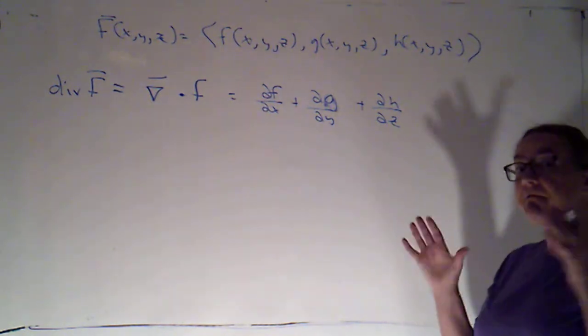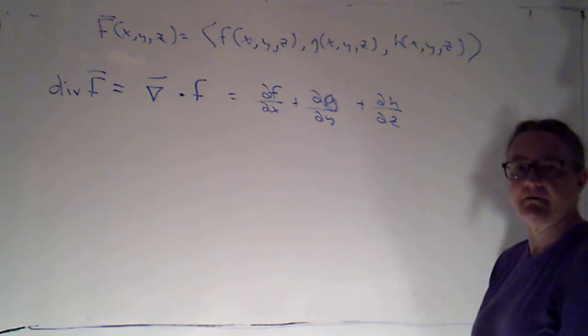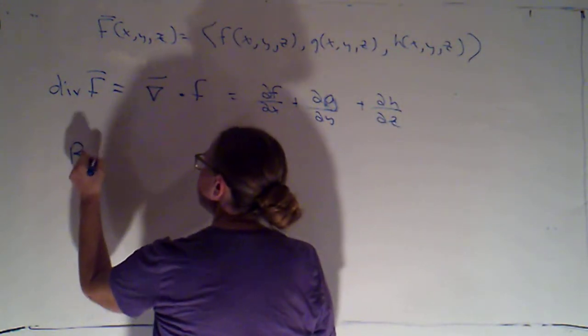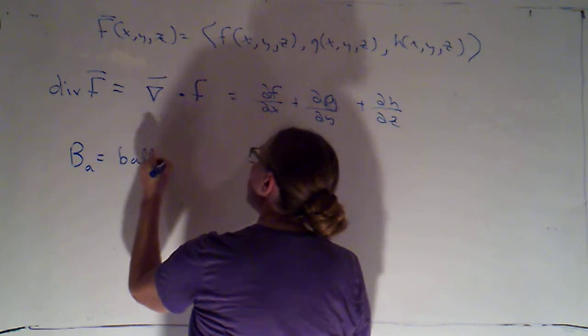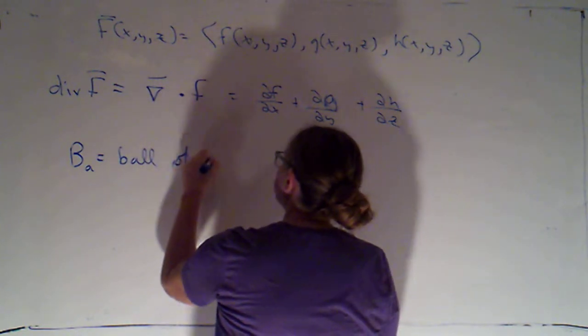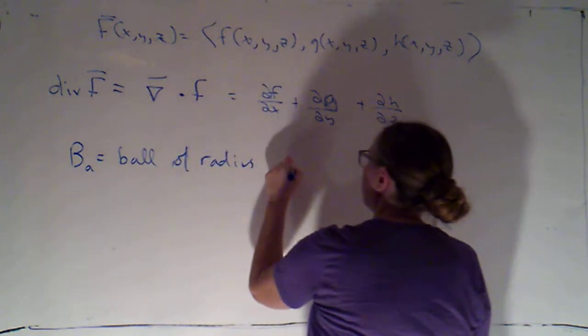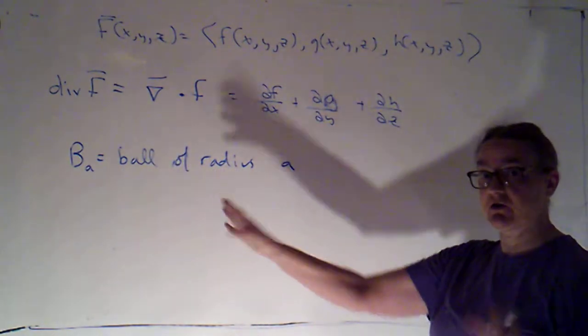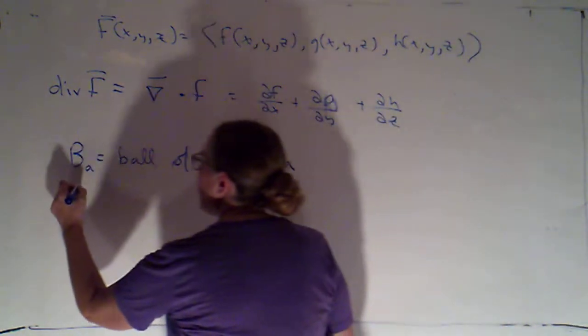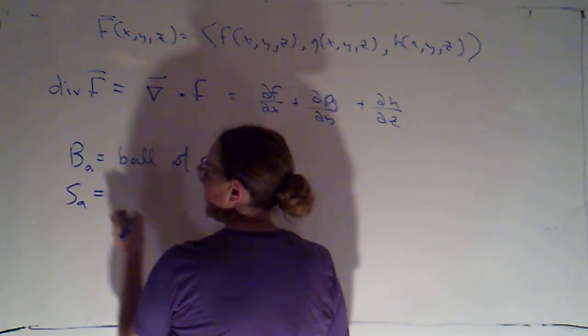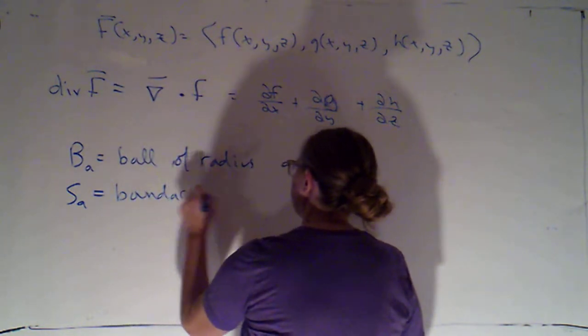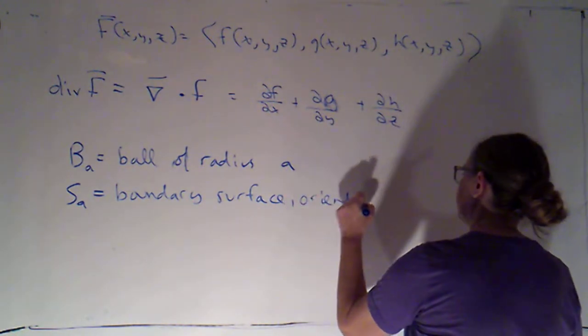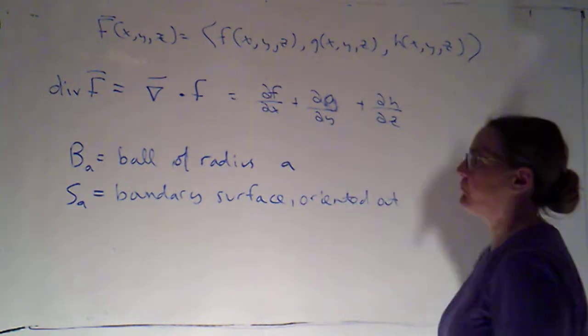So there's also the physical definition of divergence of F. If I were to take B sub A to equal a ball of radius A. Remember the term ball is used just to mean the solid sphere. So this is a three-dimensional sphere that has some volume. I'm going to take S sub A to be its boundary surface. And we'll orient it out.